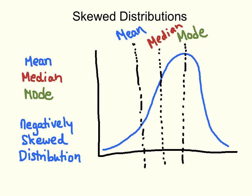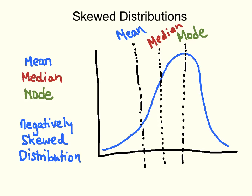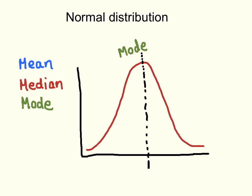For a positively skewed distribution, it'll be the reverse. For a normal distribution, the mode will be at the apex, which is in the center. The median is also in the center because the definition of a normal distribution is that it's symmetrical — 50% of the observations are on one side and 50% are on the other. So the median is also in the center, equal to the mode. The normal distribution is also characterized by having the mean at the center. So for the normal distribution, the median, mean, and mode are all at the same point — namely the center or apex of the distribution.